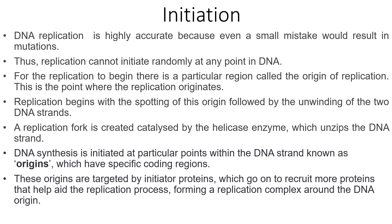The first step of DNA replication is initiation. DNA replication is highly accurate because even a small mistake will result in mutations. Replication has to occur at a specific point — it cannot just happen at any point in the DNA. For replication to begin, there has to be a region called the origin of replication. This is the point where the replication originates. This occurs with the unwinding of the two DNA strands once the origin has been spotted. A replication fork is then produced and catalyzed by the helicase enzyme which unzips the DNA strand. DNA synthesis is initiated at points called the origins, and these origins are targeted by initiator proteins which recruit more proteins to form a replication complex around the DNA origin.